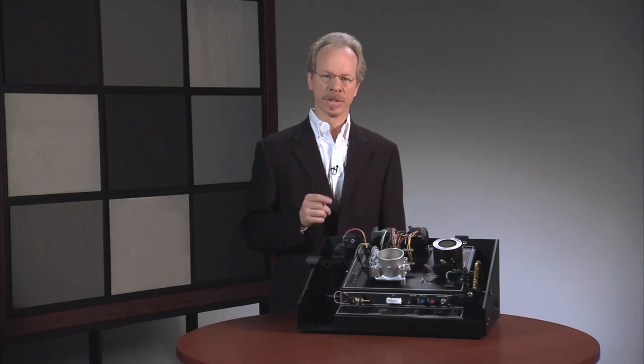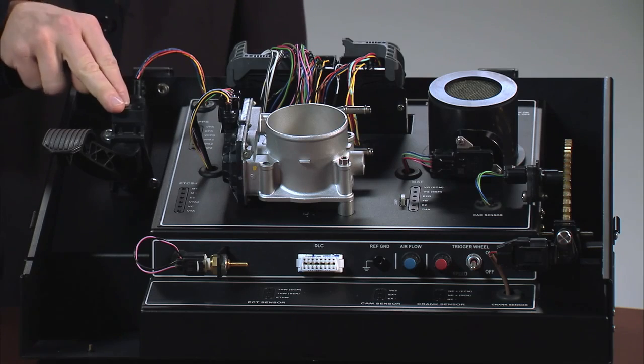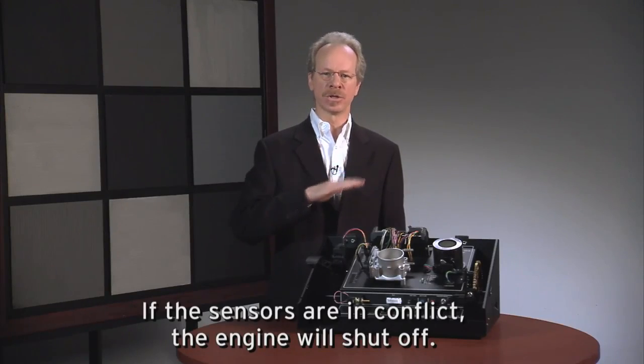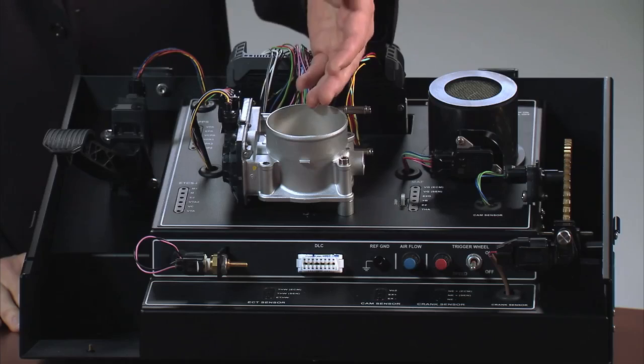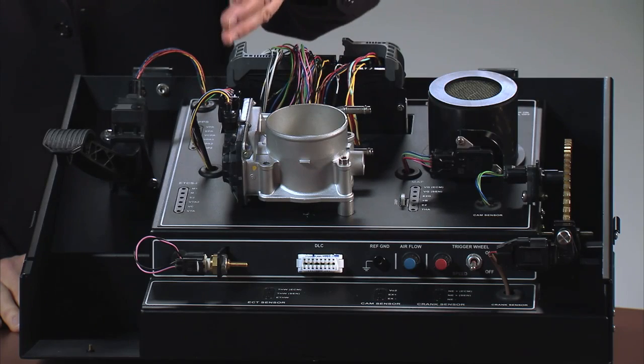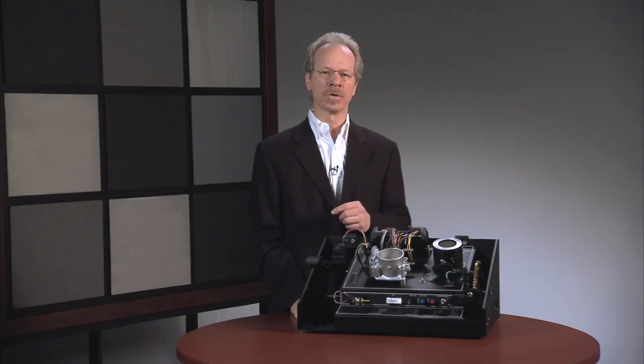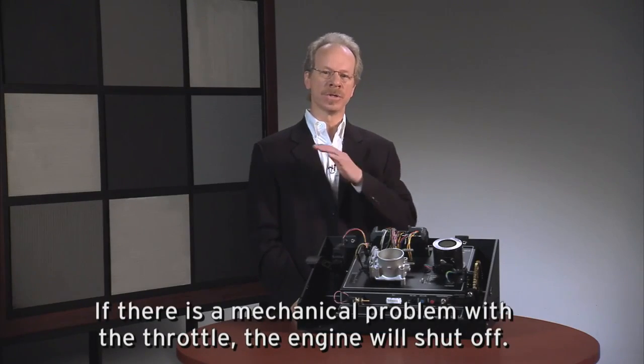If there's a discrepancy between the position of the accelerator pedal and the electronic throttle assembly, the fail-safe is for the engine to shut off. If there's a mechanical problem or obstruction, or if the throttle motor sees a signal that did not come from the engine control module, the fail-safe is for the engine to shut off.